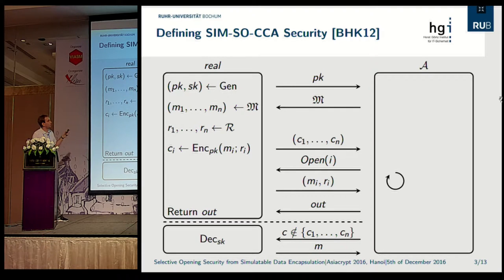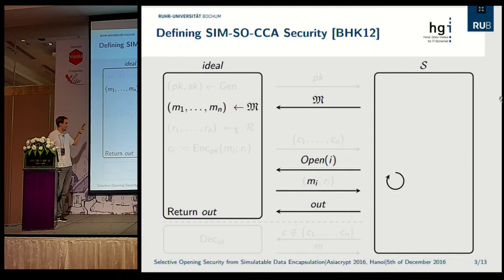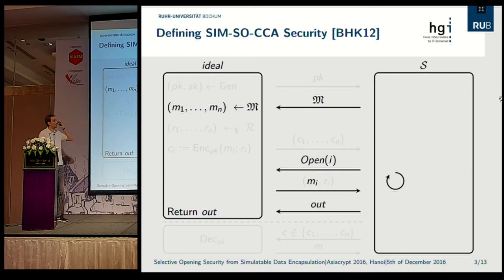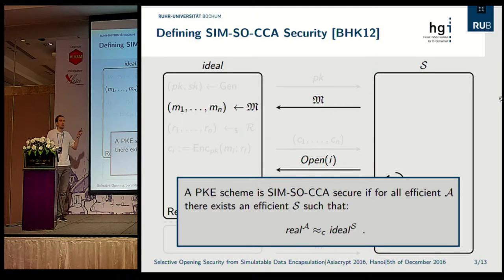For the ideal game, we remove every artifact from public key encryption: there is no key generation, no public key sent, no encryption happening, and no access to the decryption oracle. The adversary in the ideal game is relabeled as a simulator, which is allowed to make open queries but will only receive the message. We call a public encryption scheme simulation-based selective opening CCA secure if for every efficient adversary there exists an efficient simulator that can derive essentially the same information — meaning the ciphertexts that weren't opened didn't leak any information.